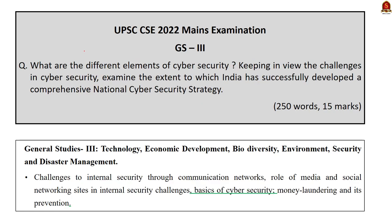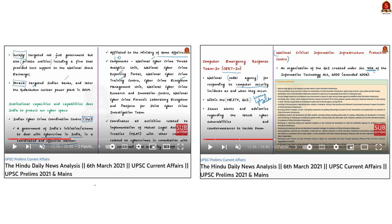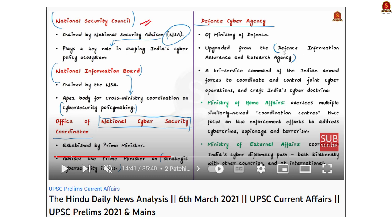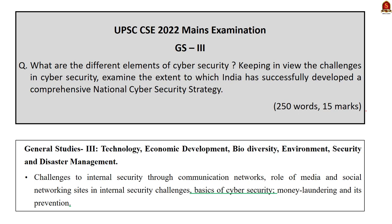Question number 19 in GS Paper 3: 'What are the different elements of cybersecurity? Keeping in view the challenges in cybersecurity, examine the extent to which India has successfully developed a comprehensive national cybersecurity strategy.' We need to address the different elements of cybersecurity and the national cybersecurity strategy. In our 6th March 2021 Hindu News Analysis, we covered institutional capacities including the Indian Cybersecurity Coordination Centre, Computer Emergency Response Team, National Critical Information Infrastructure Protection Centre, National Security Council, National Information Board, National Cybersecurity Coordinator, and the Defence Cyber Agency. In our 18th April 2022 Hindu News Analysis, we covered the national cybersecurity strategy in its entirety.